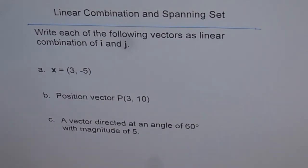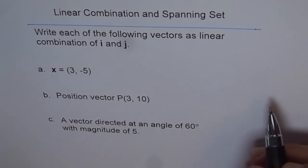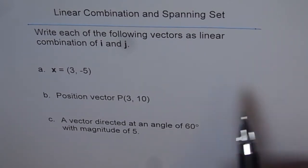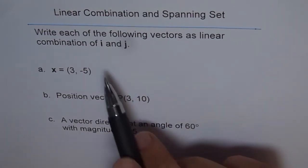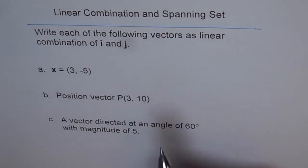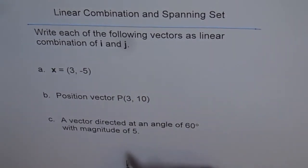Now as you know, i and j forms a spanning set for R2. That means each and every vector in R2 can be represented as a linear combination of i and j. So let's write down these vectors as a linear combination of i and j. i is a unit vector along x-axis and j is a unit vector along y-axis.